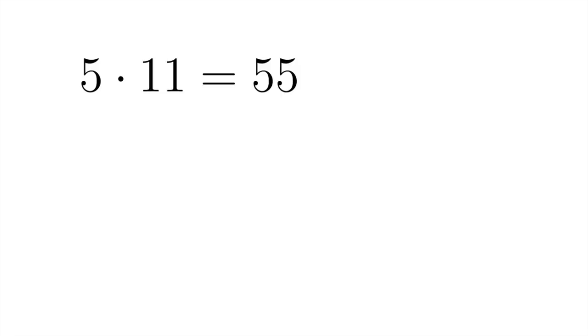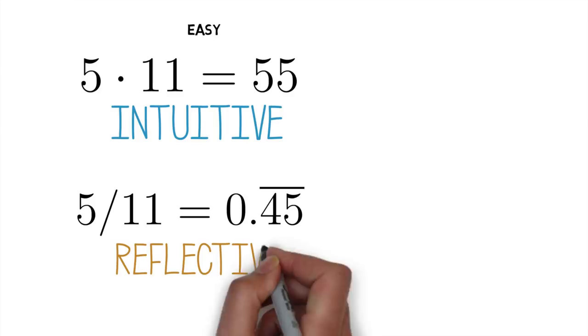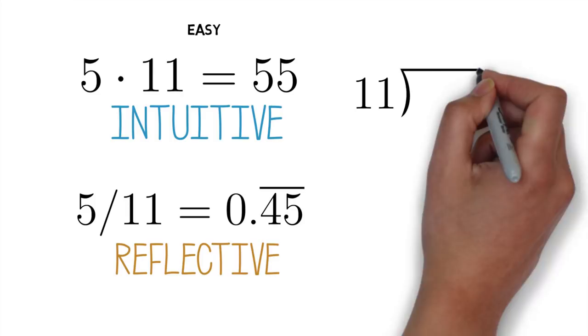But if I ask you to divide 5 by 11, you probably have to go through a series of steps in doing the long division. That's reflection, not intuition at work. But notice that when you're doing that long division, it breaks down into a series of single digit operations, which are each intuitive.